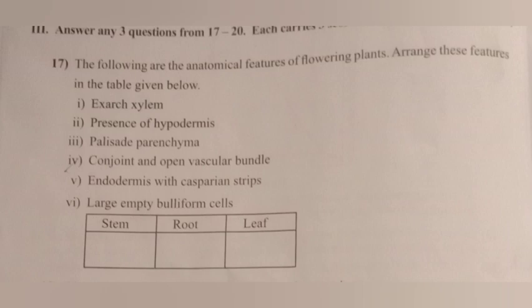Question 17. The following are the anatomical features of flowering plants. Arrange these features in the table. Answer: 1. Exarch xylem — Root; 2. Presence of hypodermis — Stem; 3. Palisade parenchyma — Leaf; 4. Conjoint and open vascular bundle — Stem; 5. Endodermis with Casparian strips — Root; 6. Large and bulliform cells — Leaf.